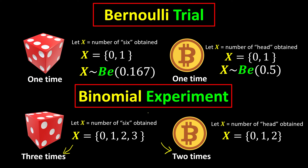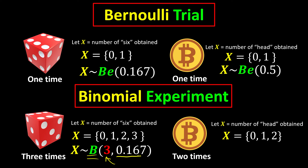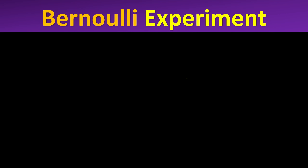A binomial experiment is nothing but combining more than one Bernoulli trial. We can say our random variable x is distributed according to the binomial experiment, and we need to know the number of observations. From the dice example, we have three observations, each with a probability of 0.167 for success. For the coin, x is distributed according to the binomial experiment with two observations and each toss having 0.5 probability of getting a head.